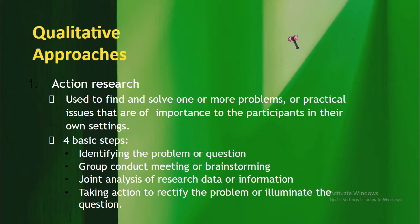The next step is taking action to rectify the problem or eliminate the question. Action research is used to find and solve one or more problems — some topics have multiple issues. It requires more brainstorming, more analysis, more investigation, identifying the root cause of the problem, and coming up with a solution.